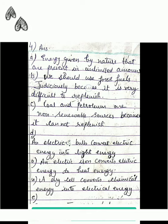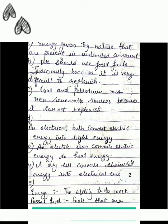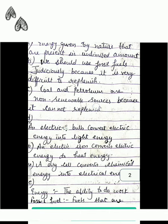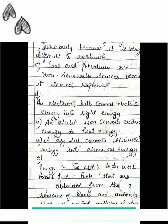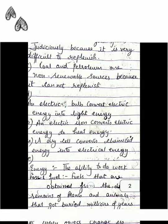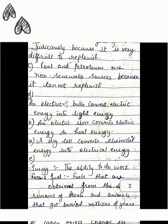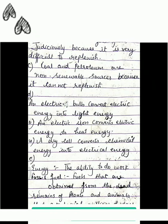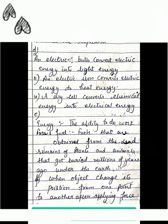D part: Give three examples of conversion of energy. First, an electric bulb converts electric energy into light energy. Second, an electric iron converts electric energy to heat energy. Third, a dry cell converts chemical energy into electrical energy.